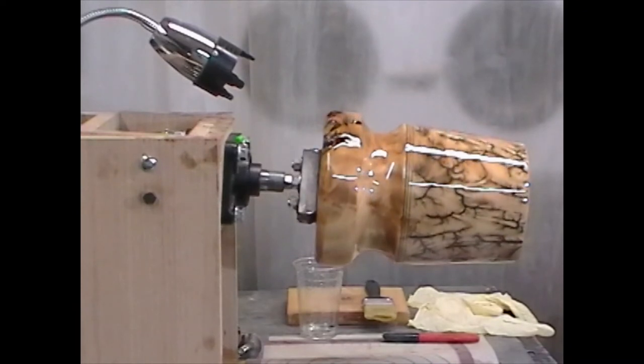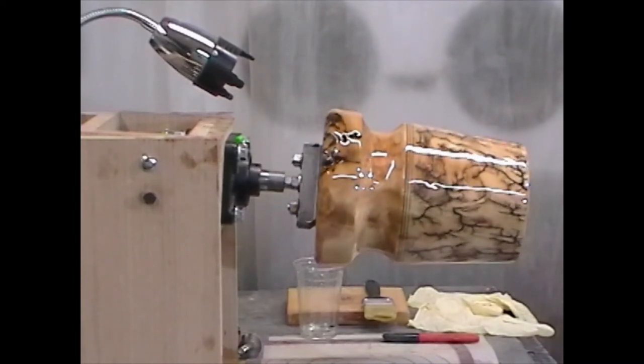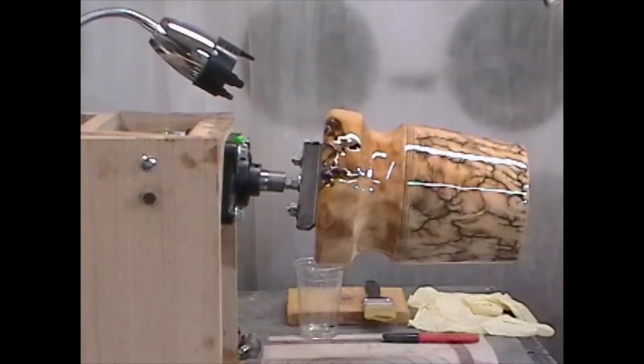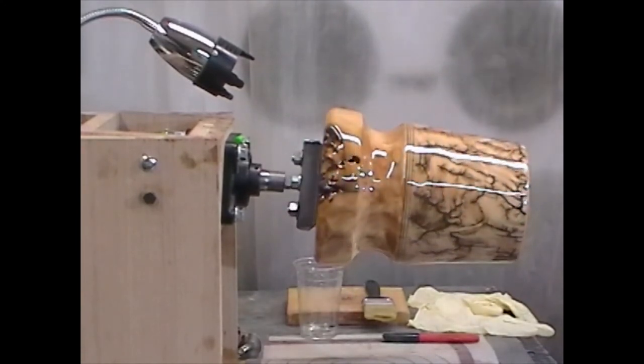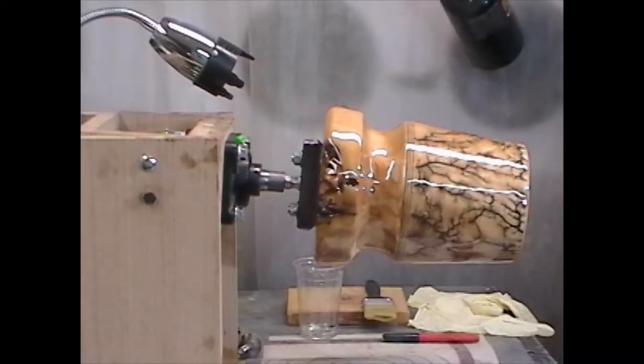The third coat of resin is applied in the exact same fashion as the second coat was applied. I sand lightly first and then I put a thinner coat of epoxy resin on for the final coat.